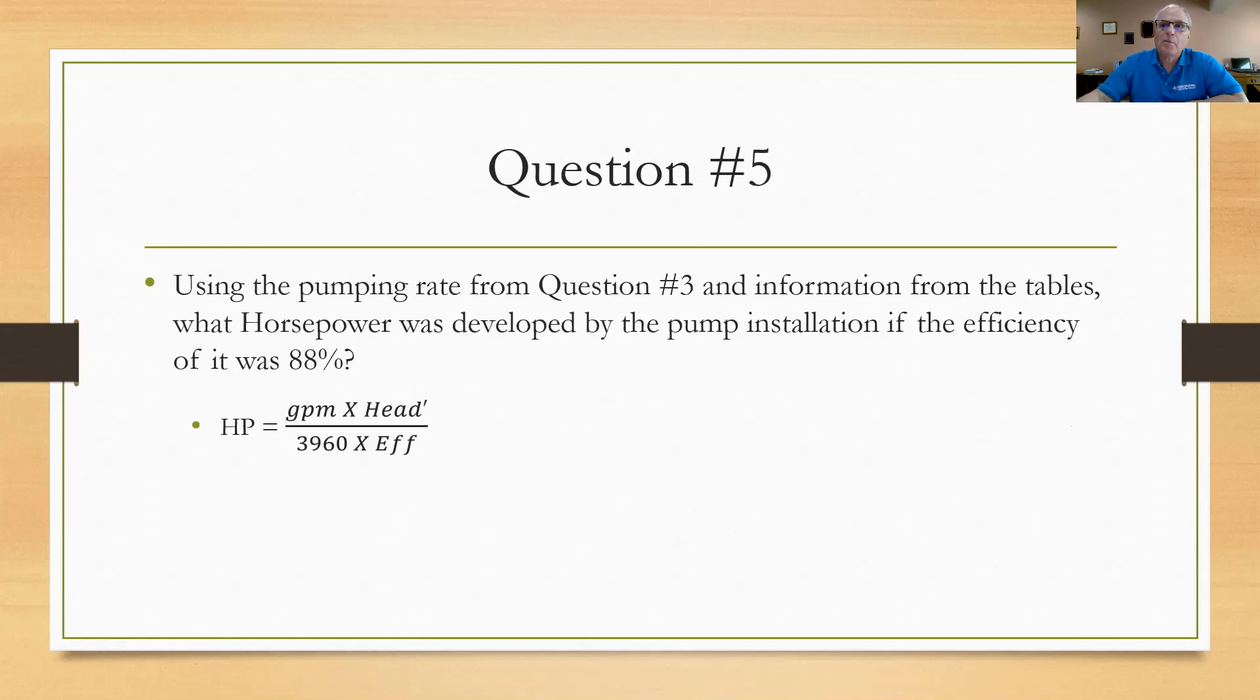Anyway, getting back to the problem, the horsepower is going to be 1,750 gallons per minute times that 90-foot head, which you had to find from going into the tables, divided by 3,960 and the 88 percent that they gave you turned into a decimal, which is 0.88. And I would come up with about 45.2 horsepower. Okay, those were certainly simple. I promise you they're going to get a little bit more complicated as we go on through the plant at Bacon Road.